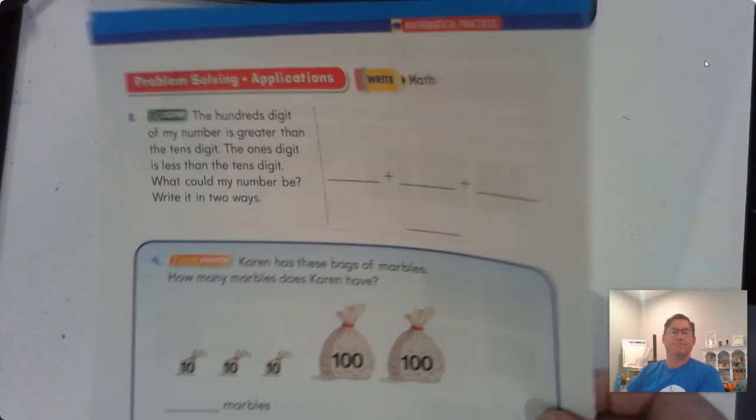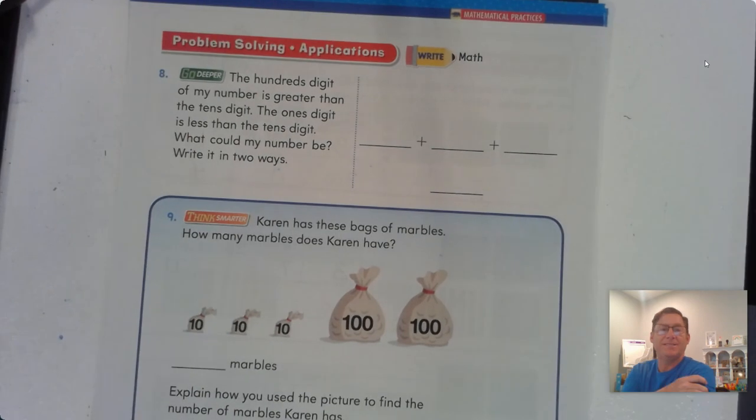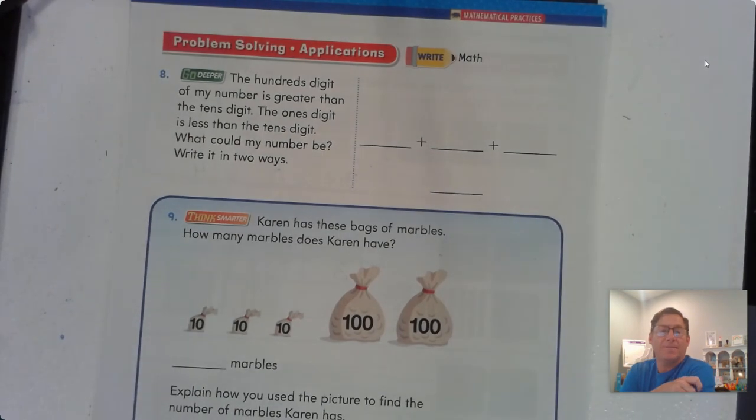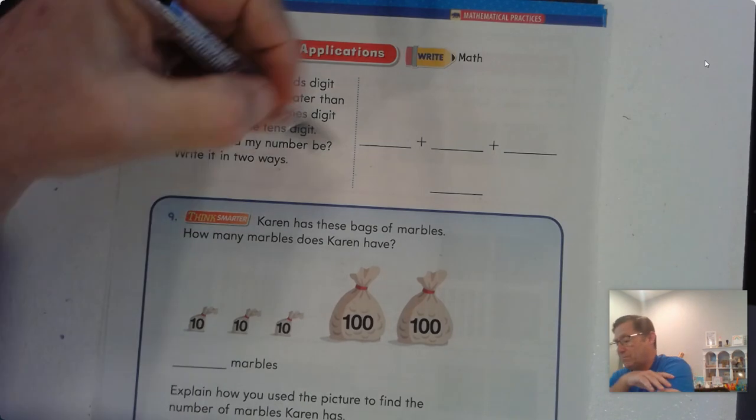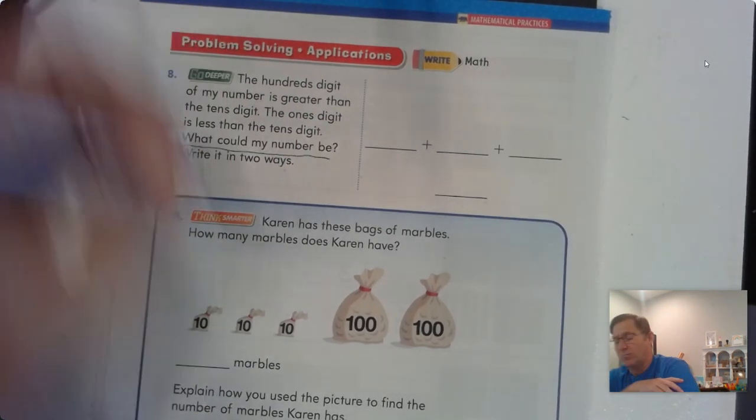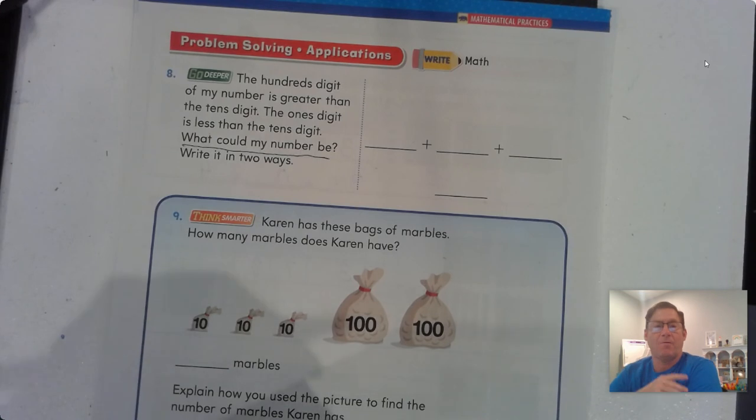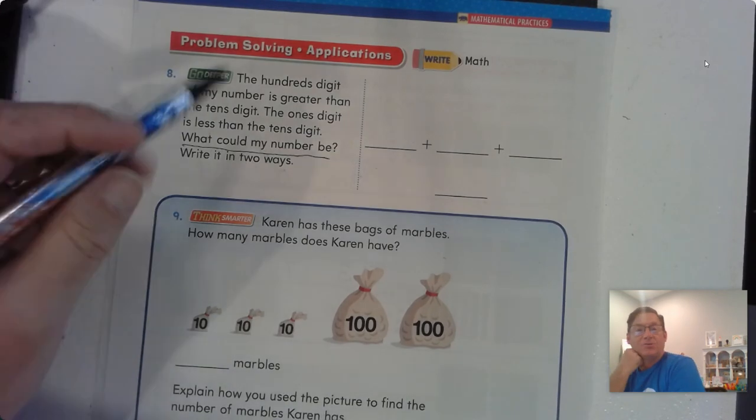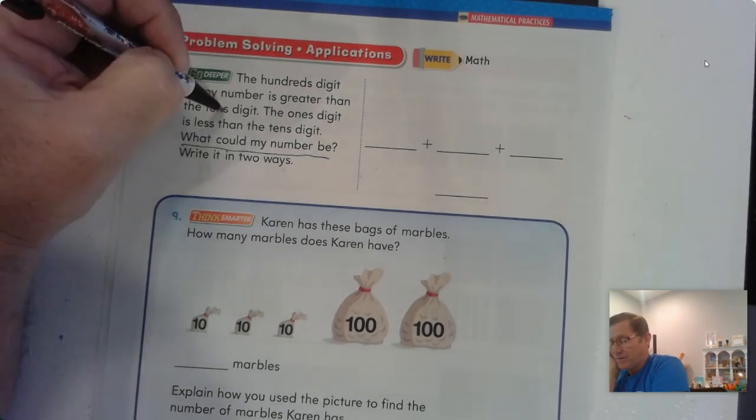All right, let's look at page 72. Number 8. The hundreds digit of my number is greater than the tens digit. The ones digit is less than the tens digit. What could my number be? Write it in two ways. All right, so let's see. The hundreds digit has to be bigger than the ten.